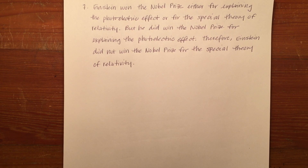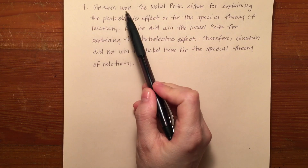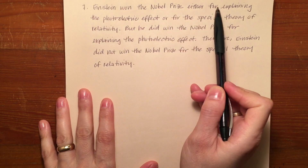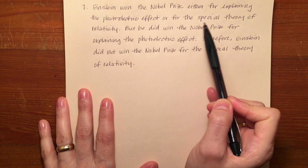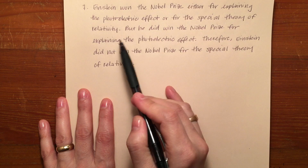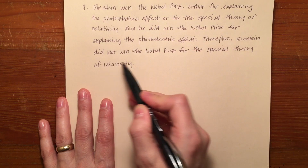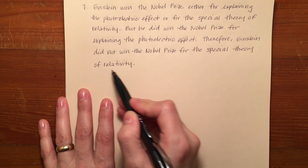You might find that some arguments are a little more difficult to translate than others. In exercise 6.4 of your book, Roman numeral I, let's look at number 7. It says: Einstein won the Nobel Prize either for explaining the photoelectric effect or for the special theory of relativity. But he did win the Nobel Prize for explaining the photoelectric effect, therefore Einstein did not win the Nobel Prize for the special theory of relativity.